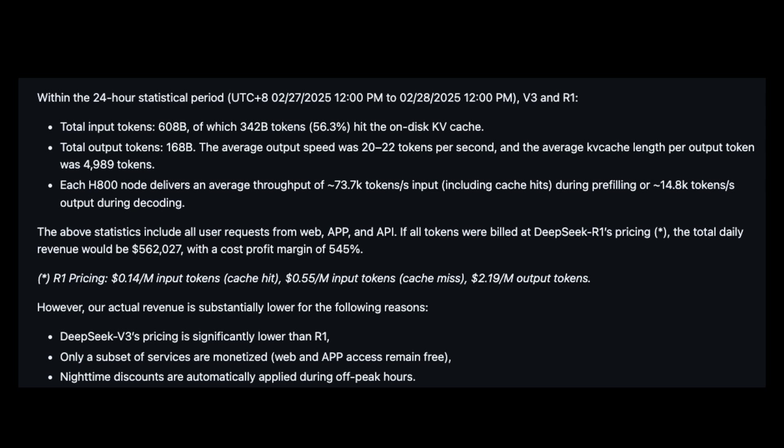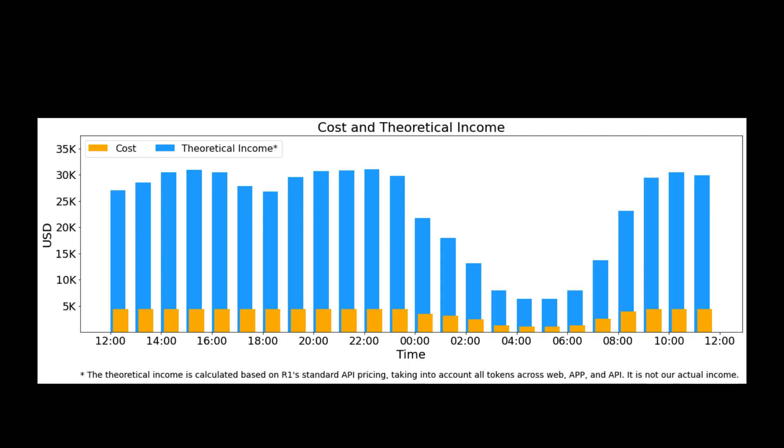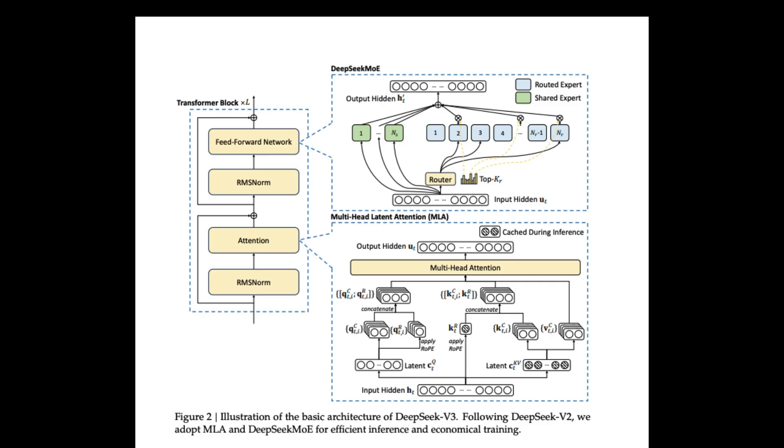If you calculate this for a 24-hour period, it could be $562,000. Meanwhile, the actual cost of running their GPUs is just $87,000 per day — that's a staggering 545% margin. How are they managing to run this entire operation at only $87,000 per day?